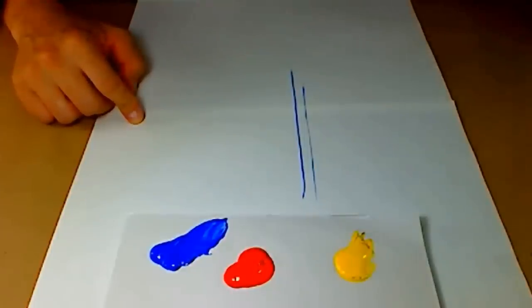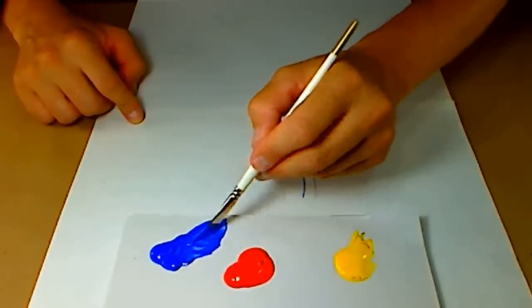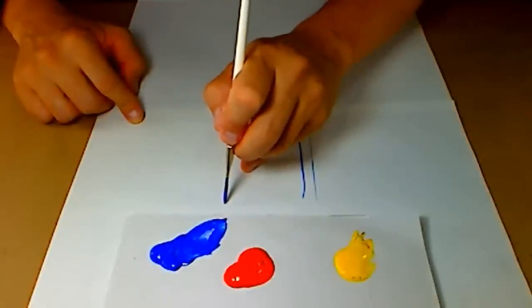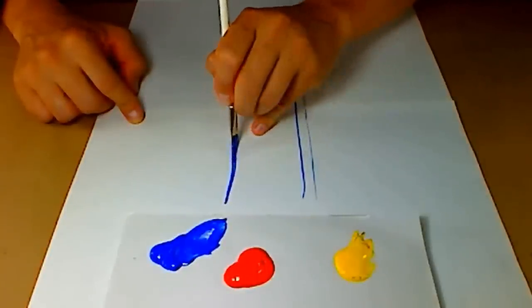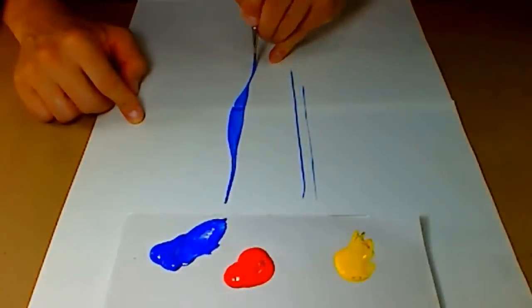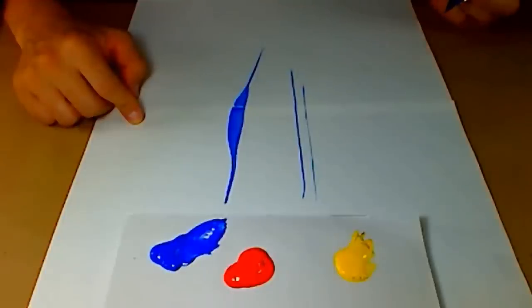If you want to get broader strokes, you can load the brush. We can start out on that chisel edge with a fine line, turn the brush on its side, come back up on its edge to get really neat strokes like this.